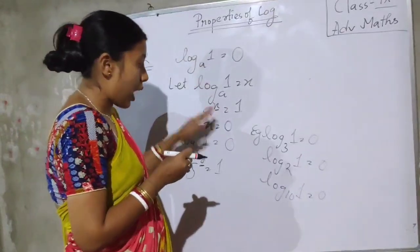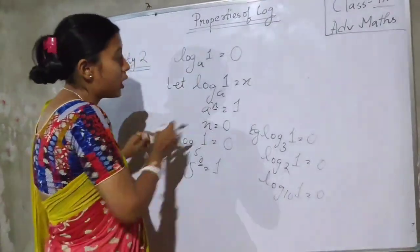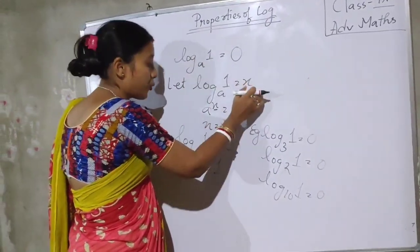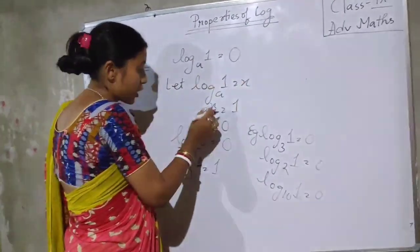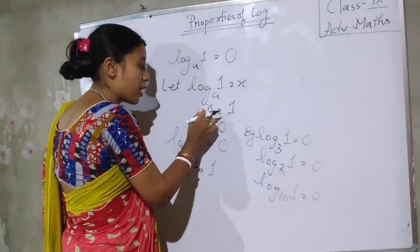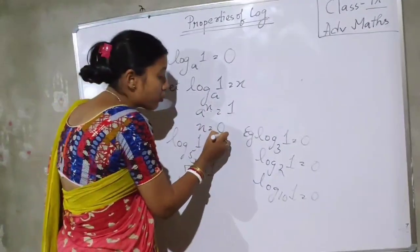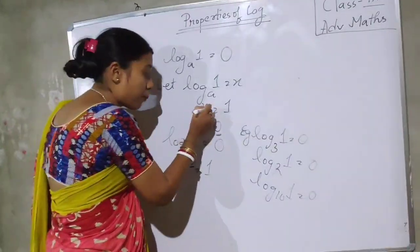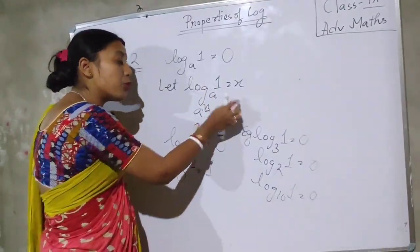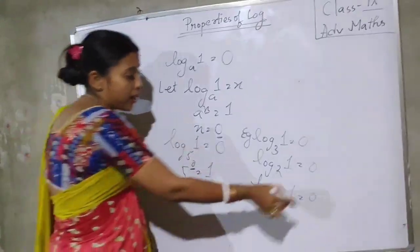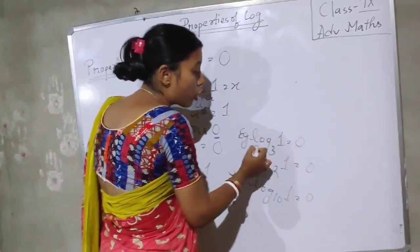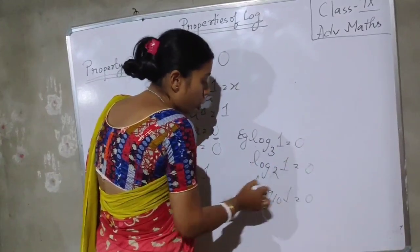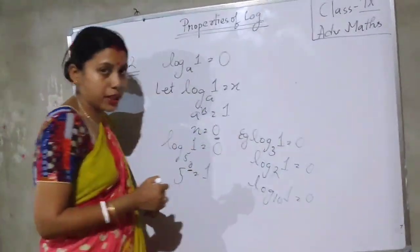You can prove it by taking log 1 base A equal to x. If we convert it into exponential form, then A to the power x will be equal to 1. And when the power is 0, then only 1 comes. So, log of 1 base 3 will be 0, log of 1 base 2 will be 0, log of 1 base 10 will be 0.